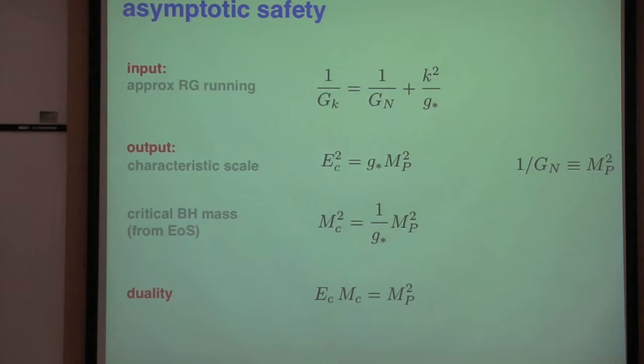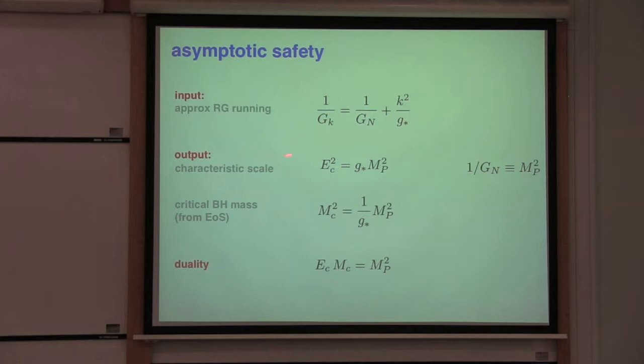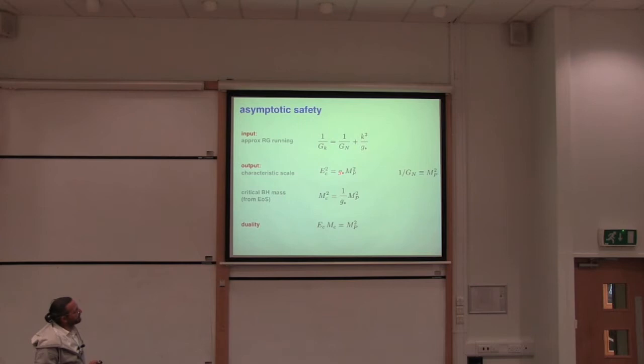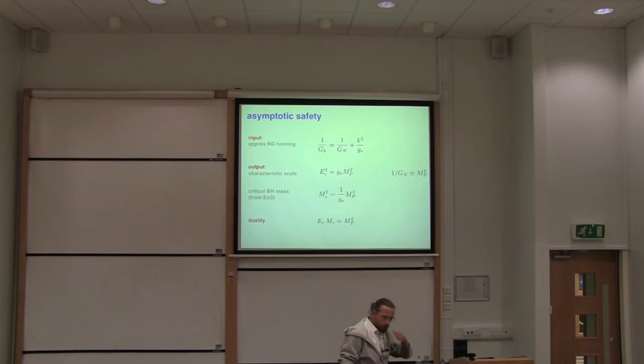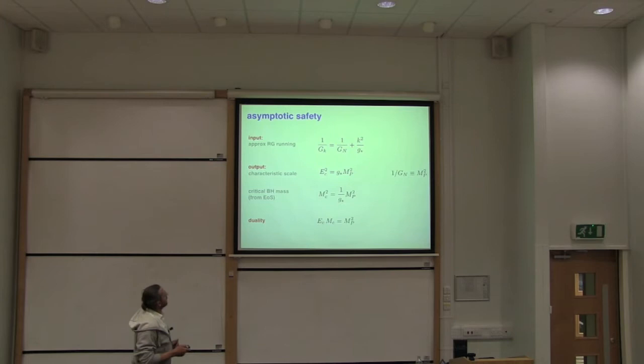Up to this slide I have not made an explicit assumption about how the RG running explicitly looks like. I have only exploited my assumption that an effective action of some sort is available whose saddle point we are trying to evaluate. But now to get something out of these equations I have to make an input.